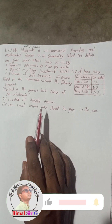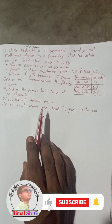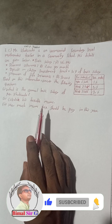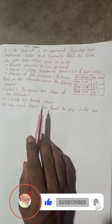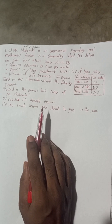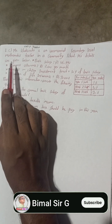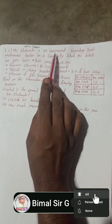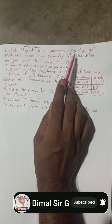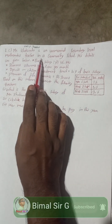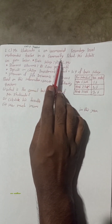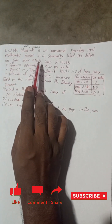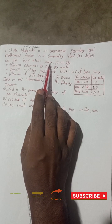Hi everybody, welcome back to Vimal Sarji's YouTube channel. This problem is from Class 9 Taxation chapter, question number 7c. Mr. Khatiwada is an unmarried secondary level mathematics teacher in a community school. His details are given below.